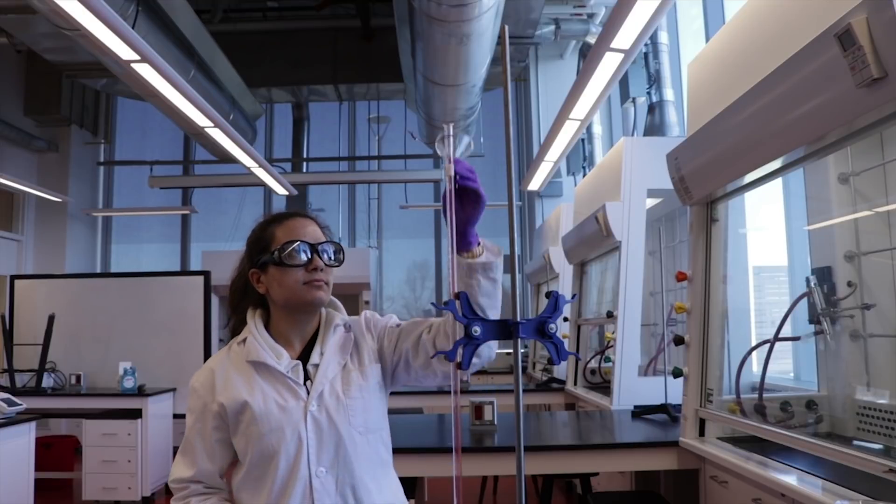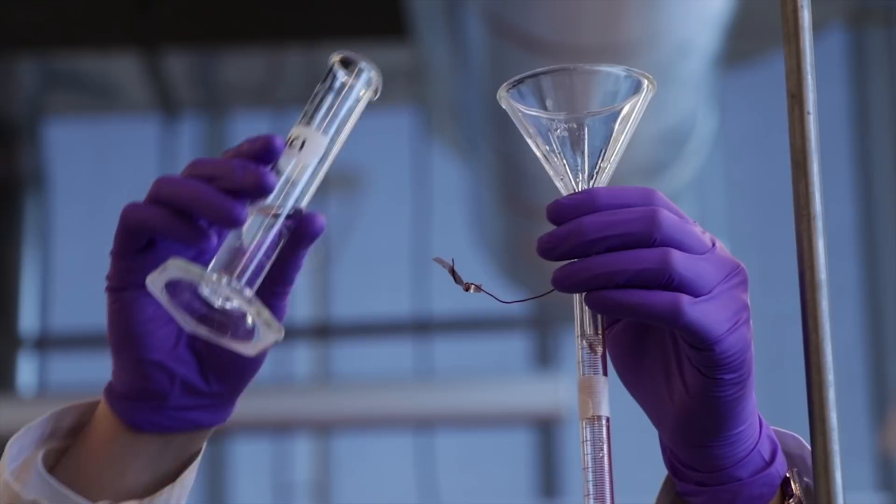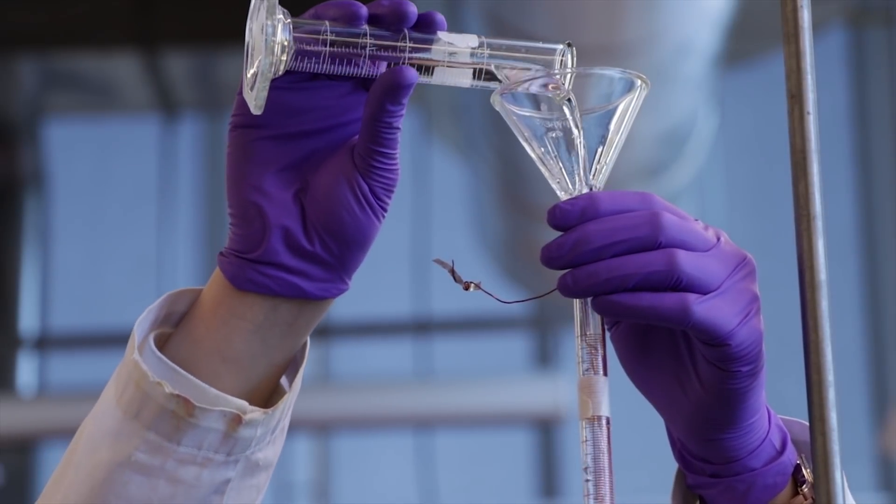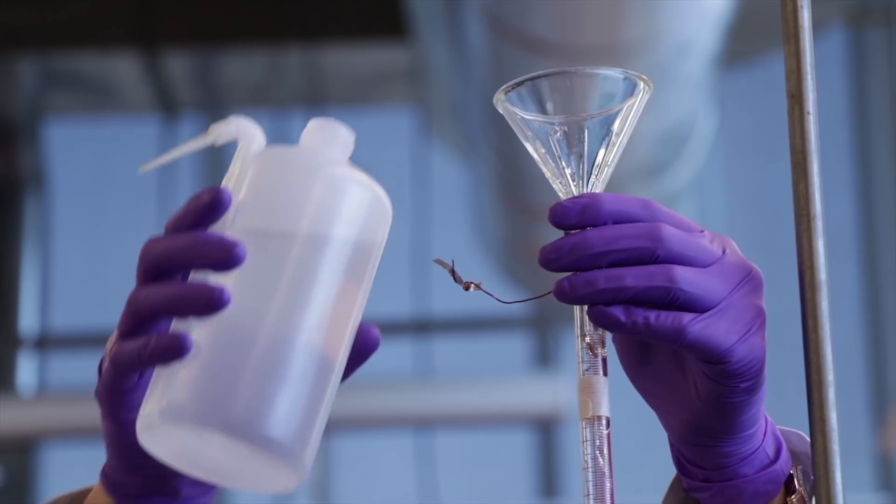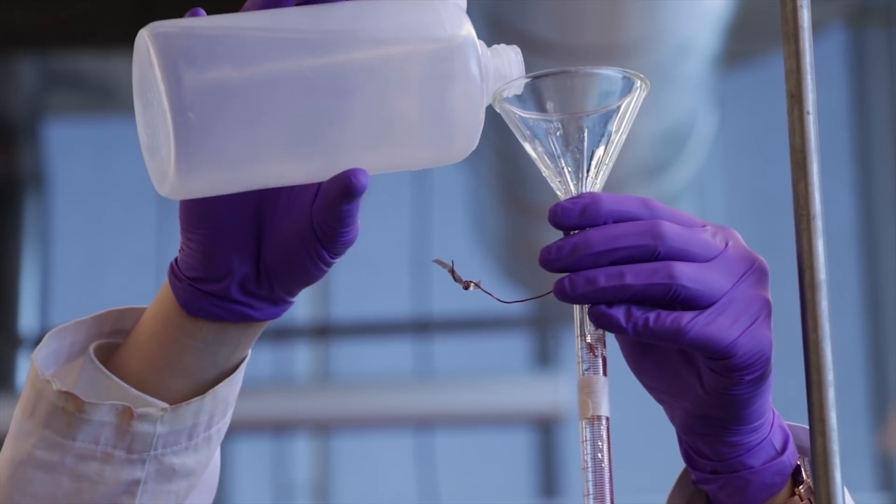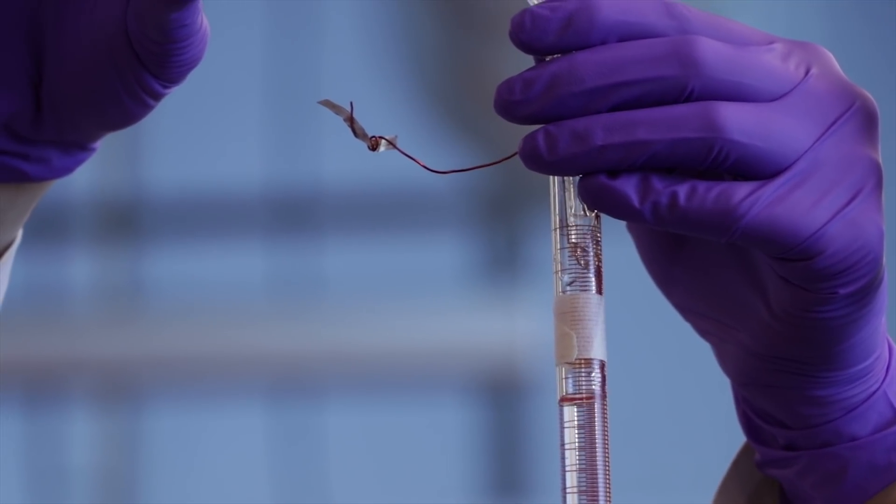Next, pour 12 mils of 3 molar HCl into the burette. Remember to wear gloves when working with HCl. Wash down the acid from the walls of the burette with distilled water and fill the remaining burette with water up to the level previously marked with tape.